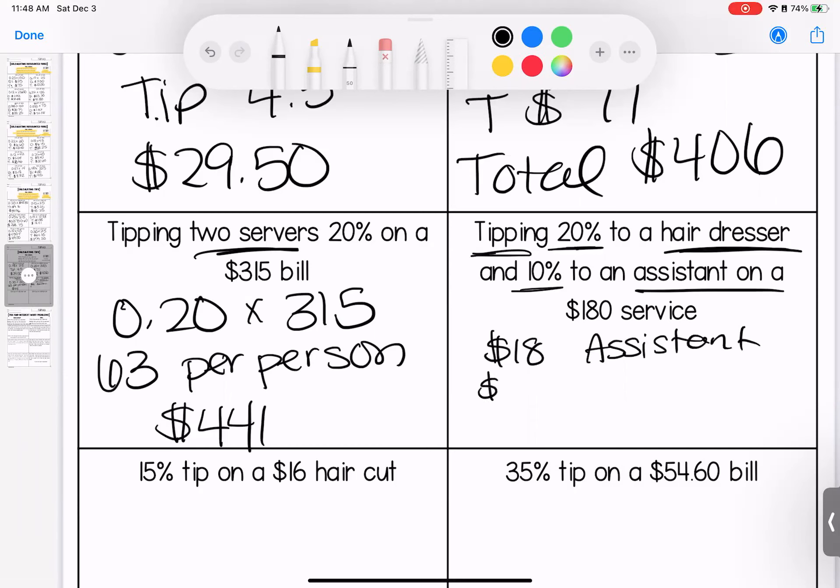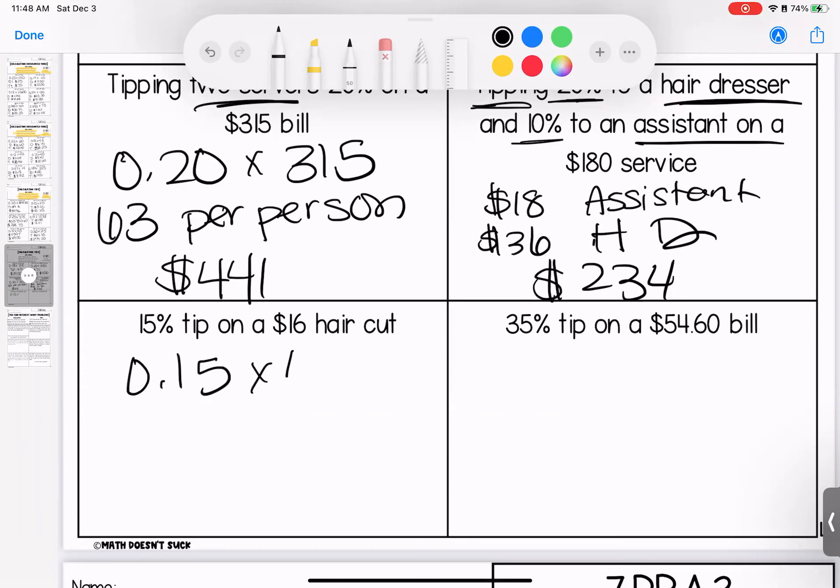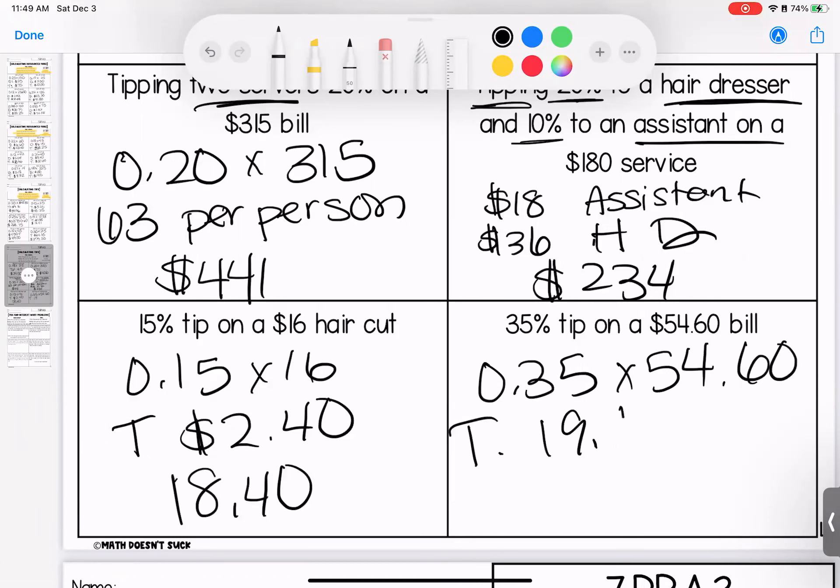I'm tipping 20% to a hairdresser, 10% to their assistant. If I do 10% multiplied, I would pay $18 to the assistant. If I double that, I get the 20%, so I'd be paying $36 to the hairdresser. When I add those two amounts plus the service, I'm paying $234. Back to a typical one, 15% tip on a $16 haircut. My tip is $2.40. The total I paid is $18.40. Last one, 35% tip on a $54.60 bill. Watch your decimals. My tip is $19.11. To get out the door, I am paying $73.71.